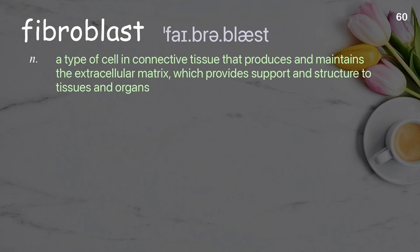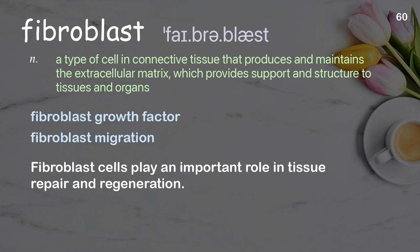Fibroblast: a type of cell in connective tissue that produces and maintains the extracellular matrix, which provides support and structure to tissues and organs. Examples: fibroblast growth factor, fibroblast migration. Fibroblast cells play an important role in tissue repair and regeneration.